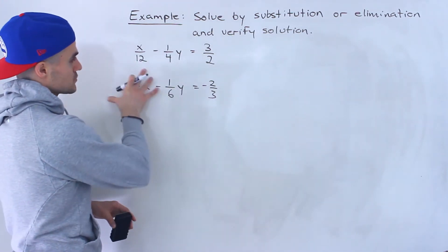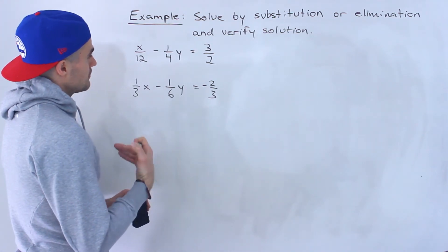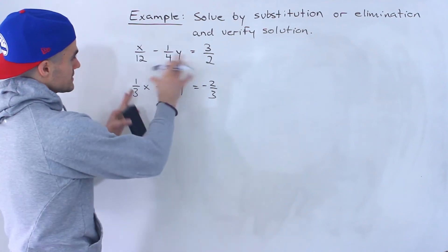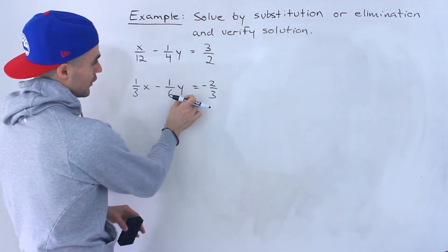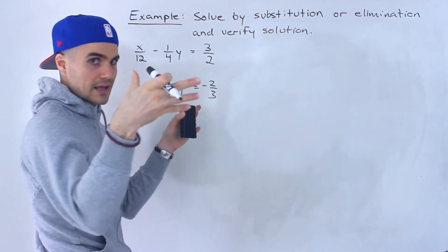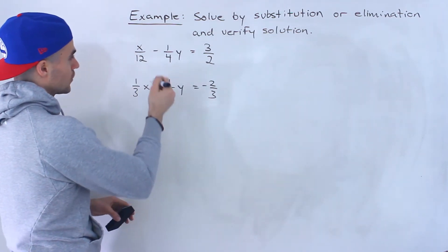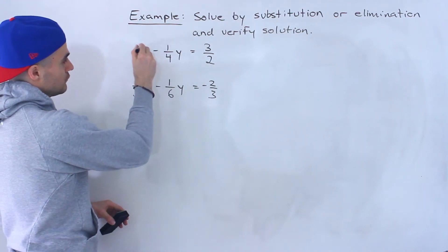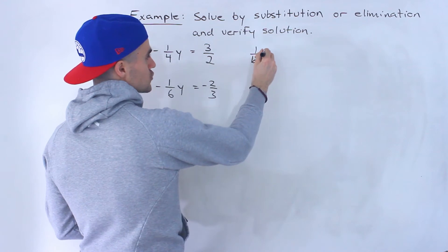So notice this one's a little bit complex because we're working with fractions. Now first thing I personally like to do when I see this is I actually like to take any expressions where the variable and the fraction are separated and then combine them. I feel like it just makes it nicer to work with. So notice that this x over 12 that's already combined.